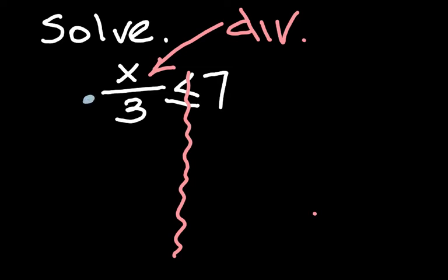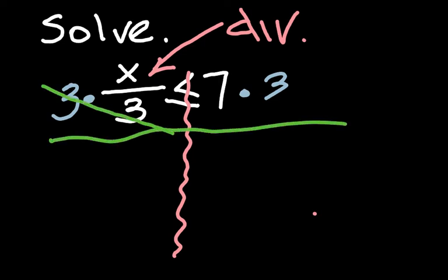So what is the opposite of division? Hopefully you know that it's multiplication. So I'm going to multiply the left side by 3, and the right side by 3. The 3's cancel out, that leaves the x. 7 times 3 is 21. If you don't know that, check it out on your calculator. And then the last step is that you're going to bring down the less than or equal to sign. So x is less than or equal to 21. Let's keep going.